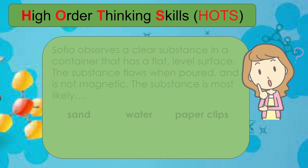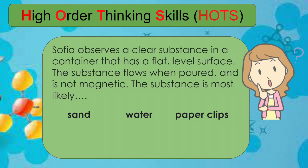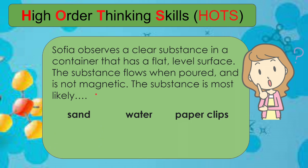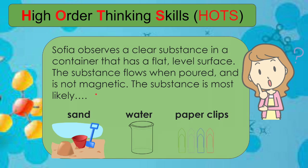Something to think about: Sofia observes a clear substance in a container that has a flat level surface. The substance flows when poured and is not magnetic. The substance is most likely: sand, water, or paper clips. What is your answer? Imagine each material in a container that has a flat level surface, where the substance flows when poured and is not magnetic.